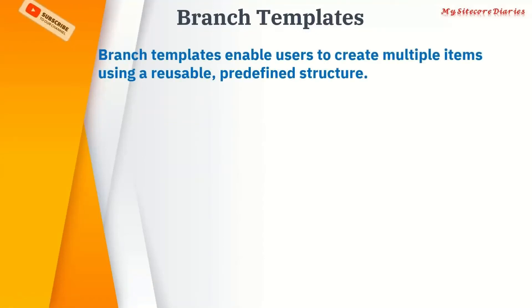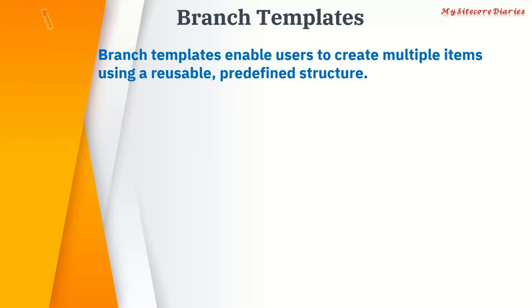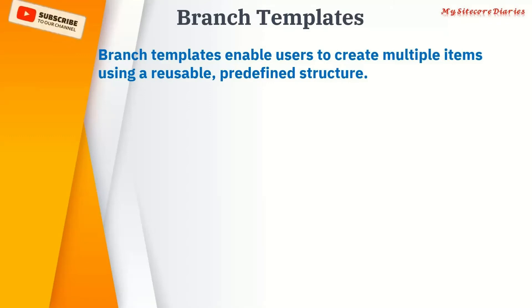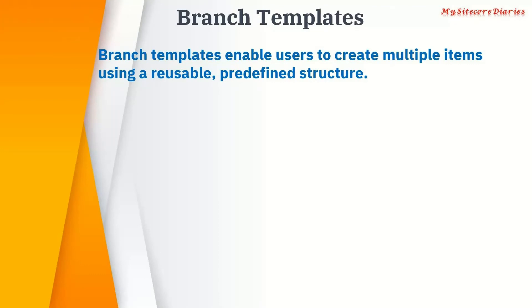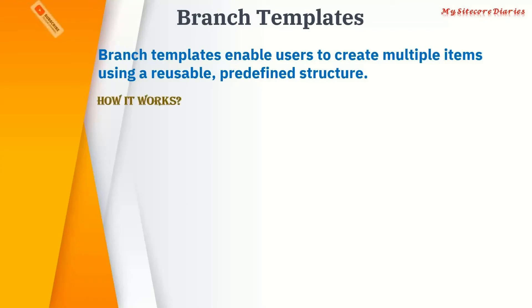A branch template enables users to create multiple items using a reusable predefined structure. You define a structure within a container, and users can reuse that container to create multiple items. In a regular template you create only a single item, but with a branch template you have multiple items created.